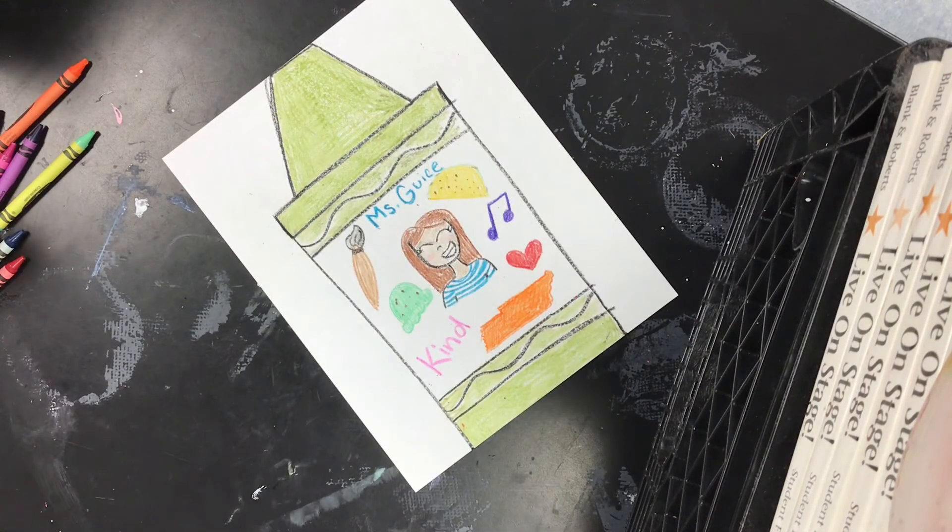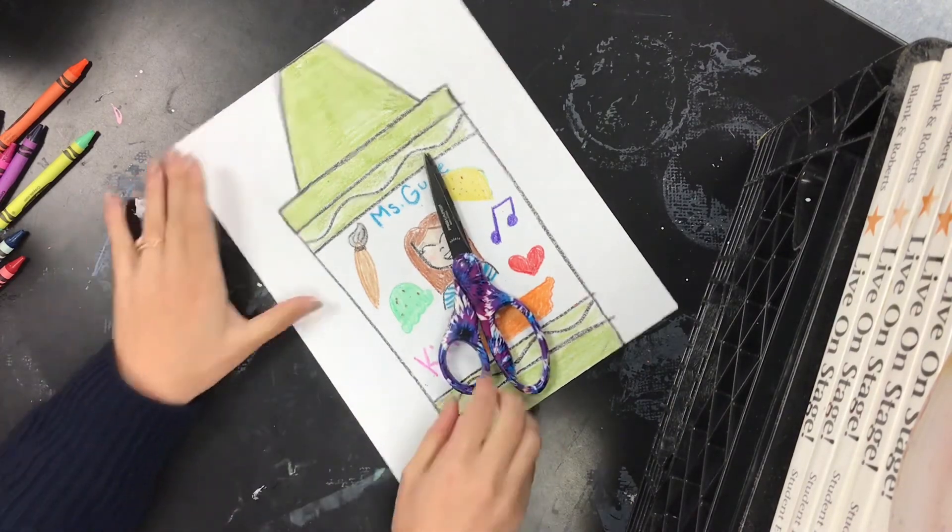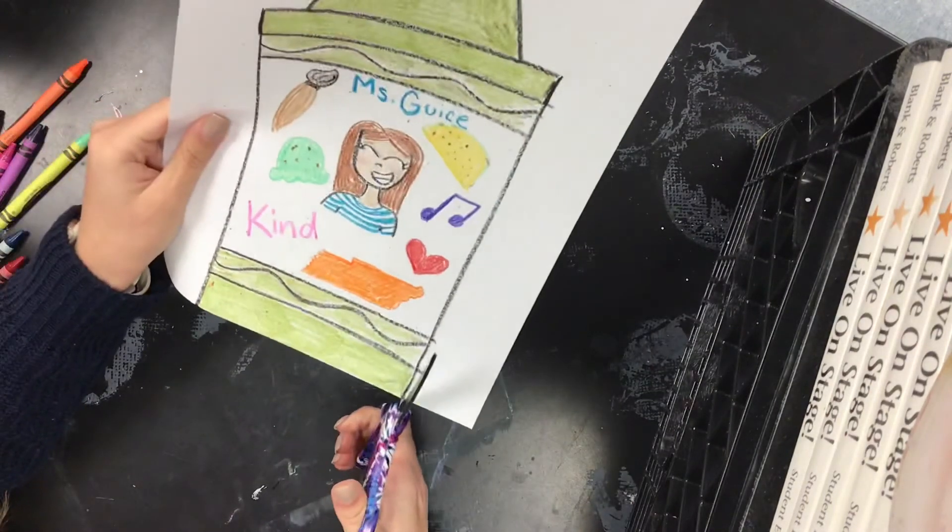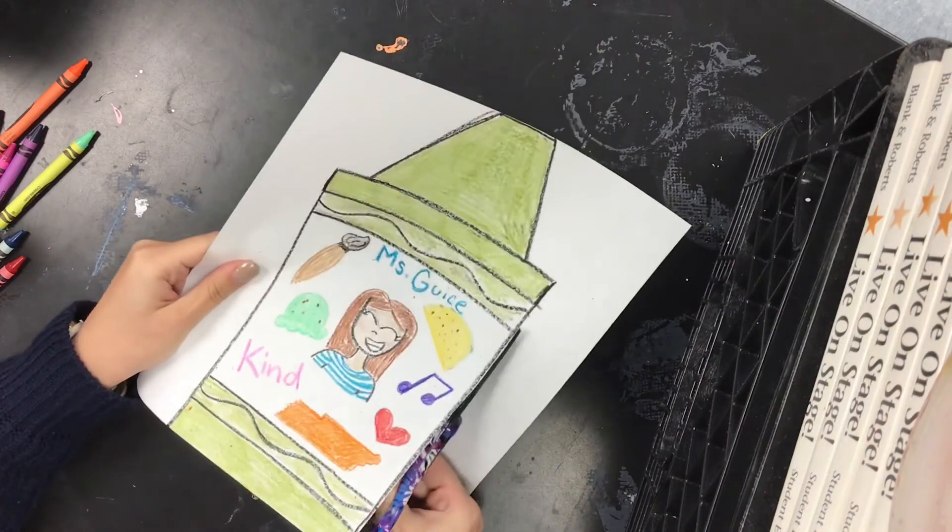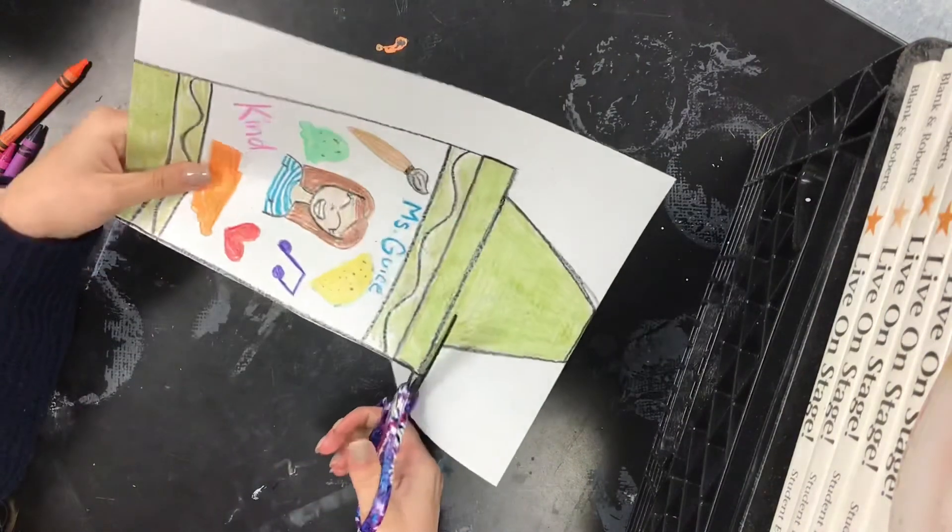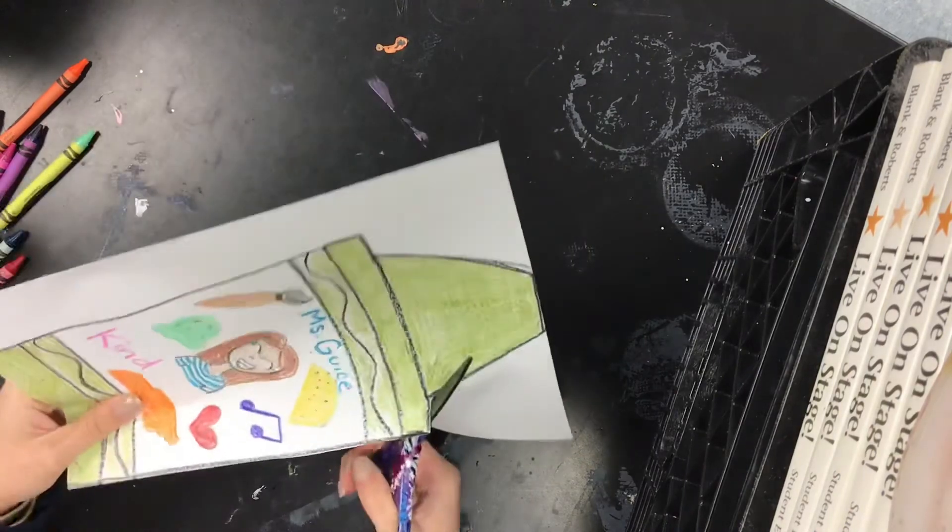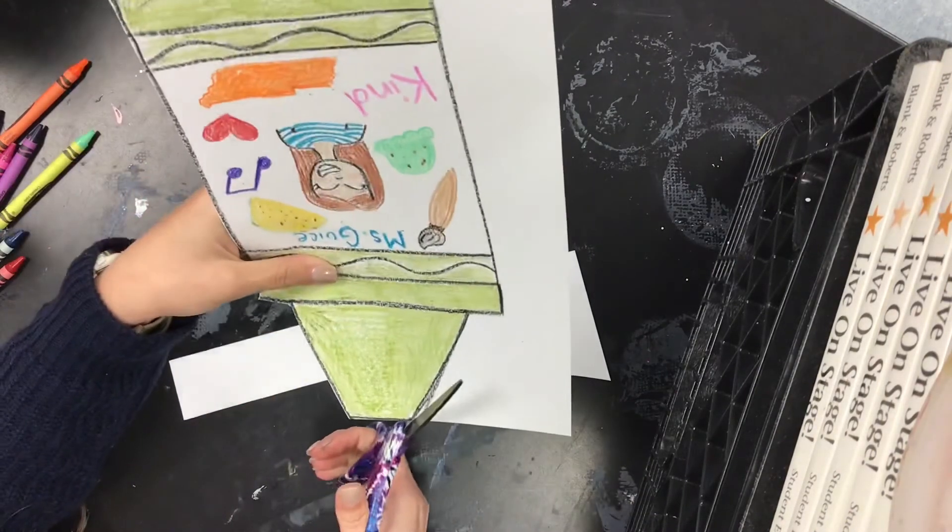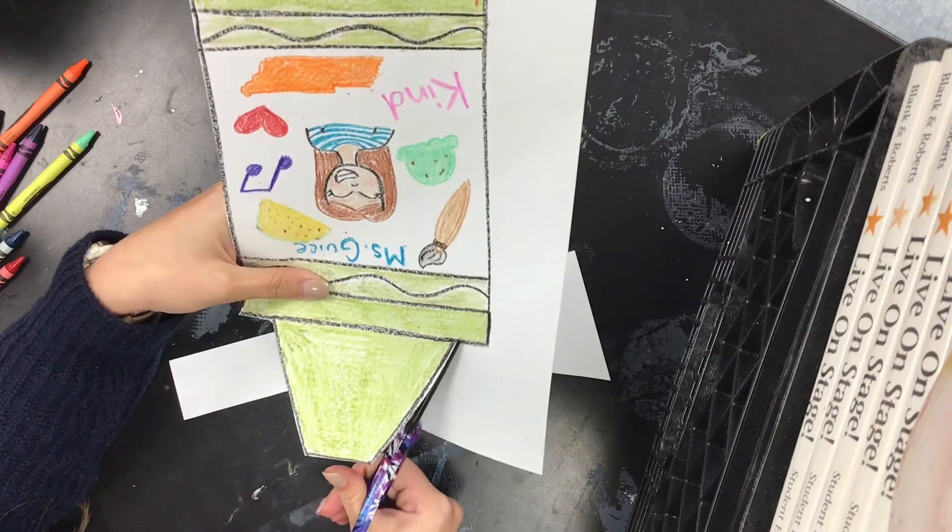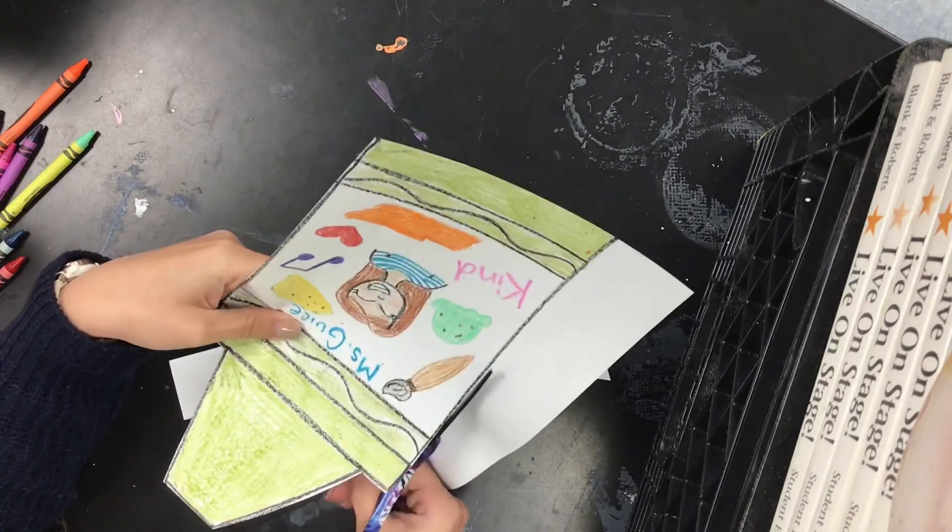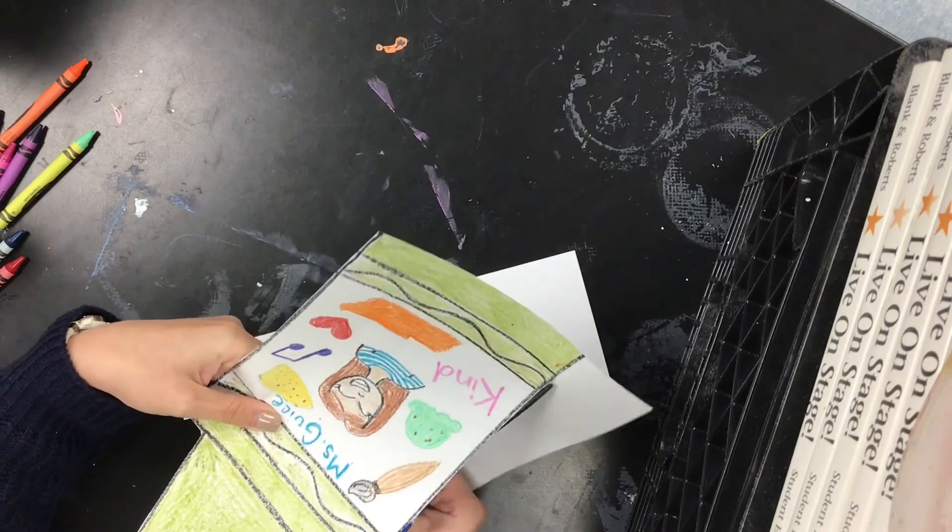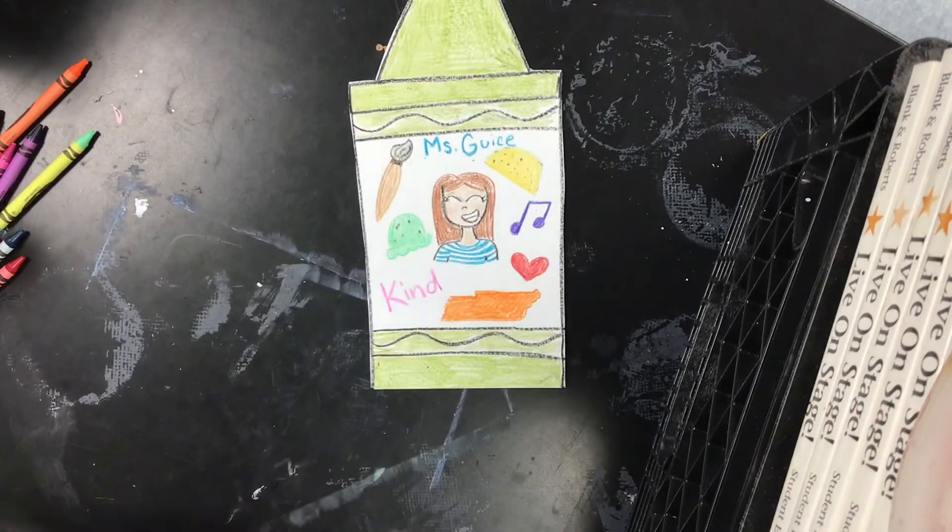Once you add all your final touches, you can grab a pair of scissors and cut out your all about me crayon. When you're all done, don't forget to upload a picture of this onto Schoology for me. And we can share our all about me crayons next time we get together. You can also keep this up in your workspace at home for you and your family to look at. Ta-da!